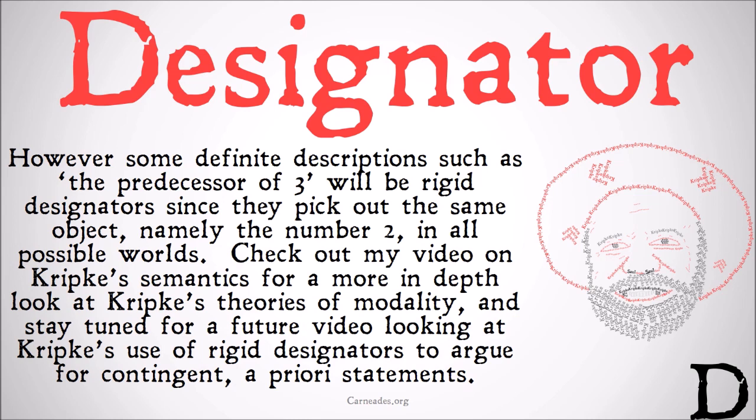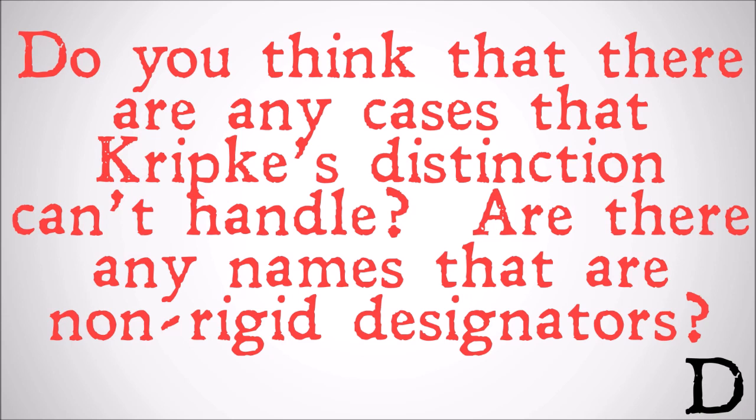Check out my video on Kripke's semantics for a more in-depth look into Kripke's theories of modality. Stay tuned for a future video looking at Kripke's use of rigid designators to argue for contingent a priori statements. Do you think there are any cases that Kripke's distinction can't handle? Are there any names that are non-rigid designators? Write your answers in the comments below. Watch this video and more at karnadis.org. And stay skeptical, everybody.